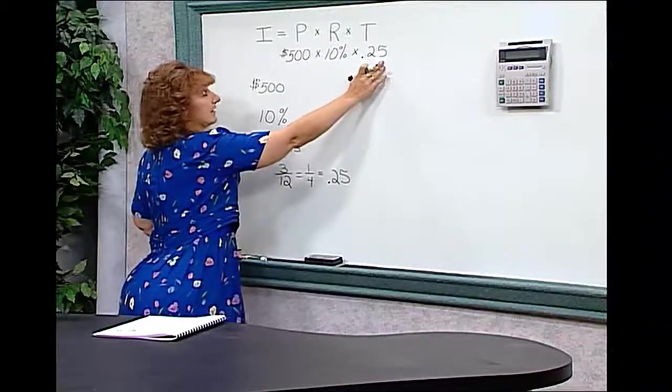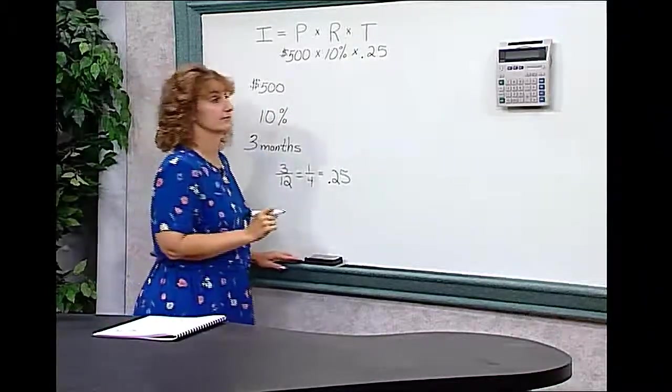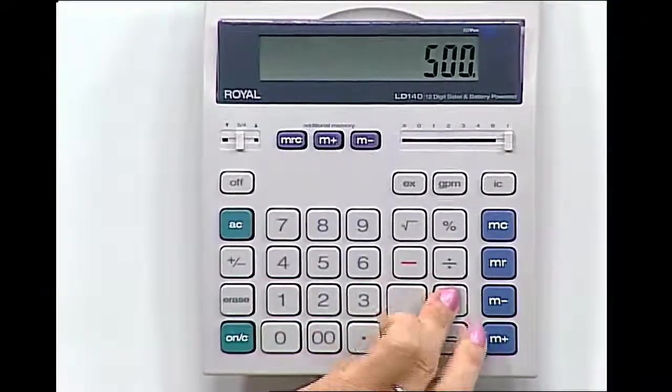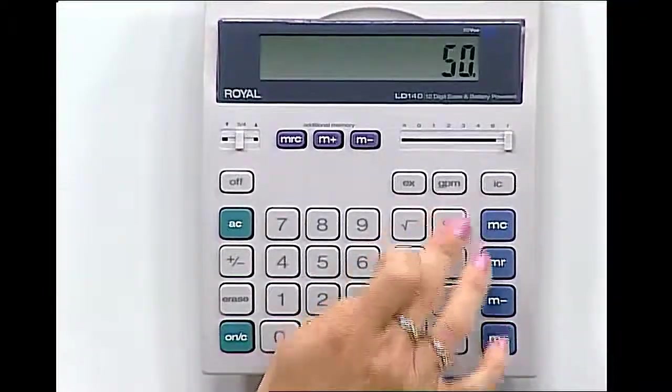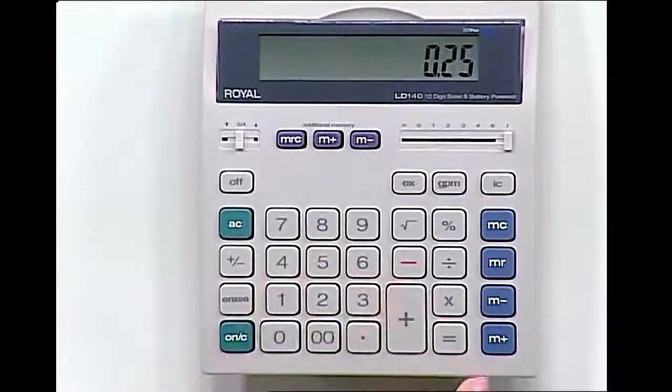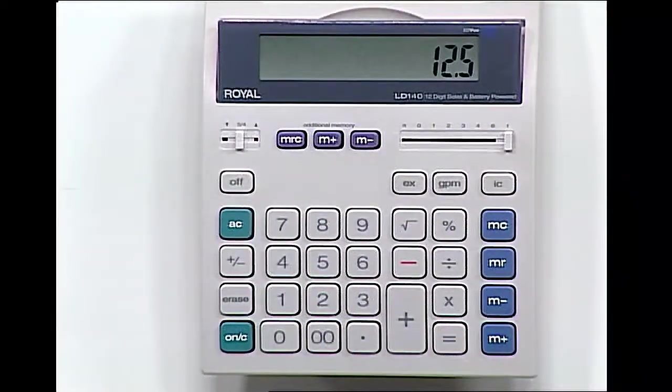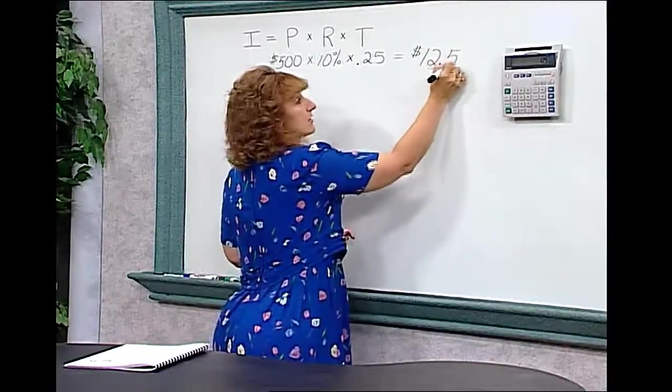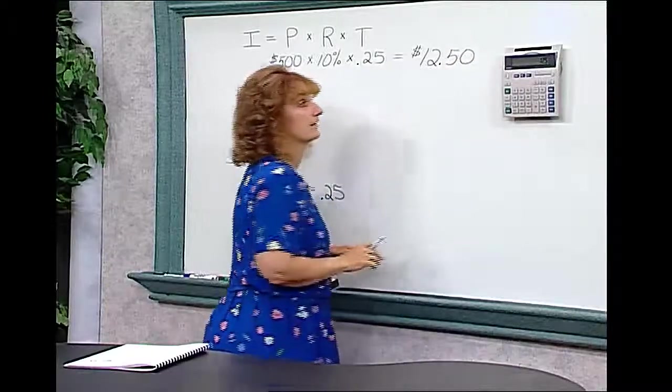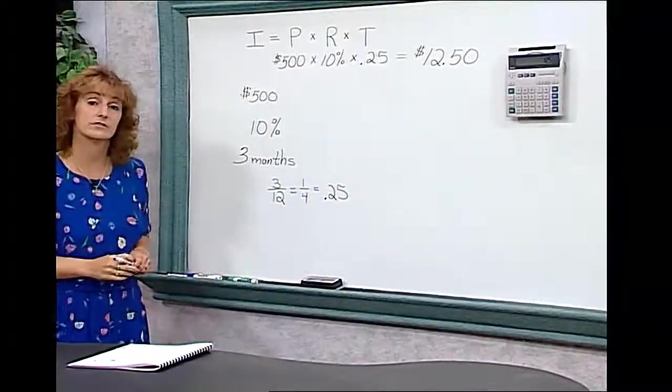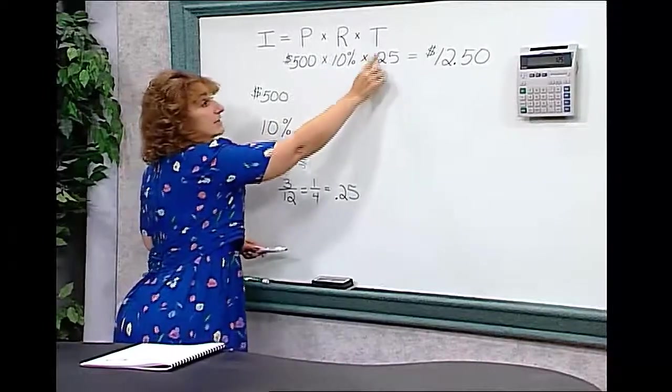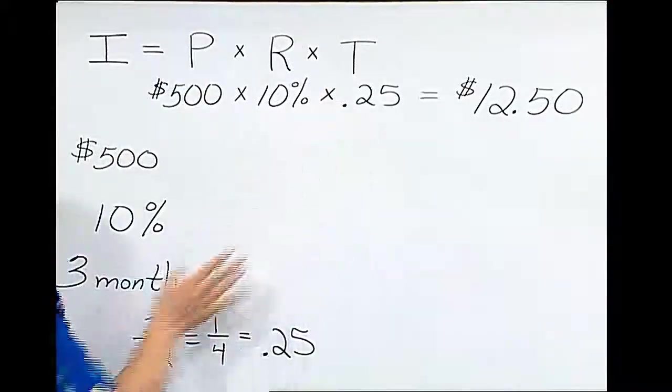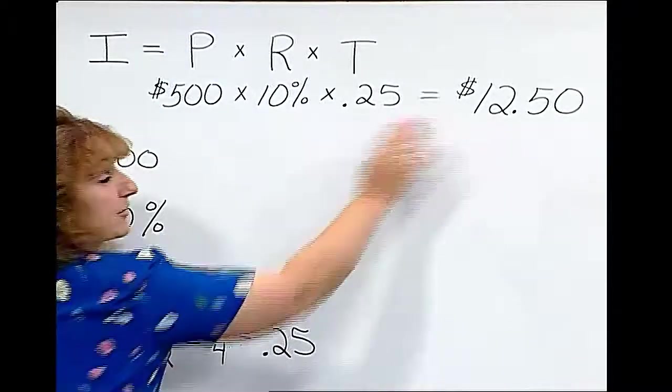Let's go over to the calculator and multiply this out. 500 times 10% times .25, we get $12.50 interest for 3 months. So remember, when you're using our simple interest formula, if the time is in months and the rate is annual, you must change those months to years before you can get your interest.